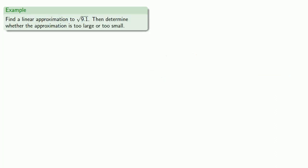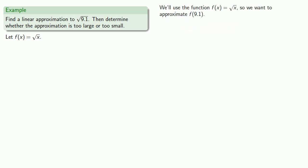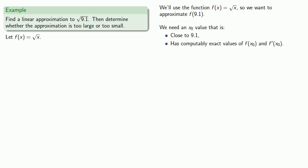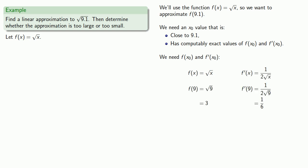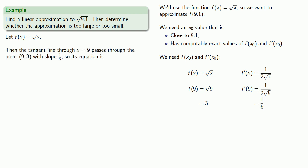What about linear approximations? Say we want to find a linear approximation to the square root of 9.1, and then determine whether our approximation is too large or too small. We use the function f of x equals the square root of x, and want to approximate f of 9.1. We choose x₀ equals 9, which is close to 9.1 and has computably exact values for f of x and f prime of x. We find that the tangent line through x equals 9 passes through the point (9, 3) with slope 1/6.